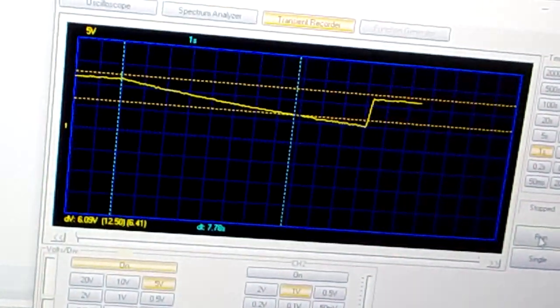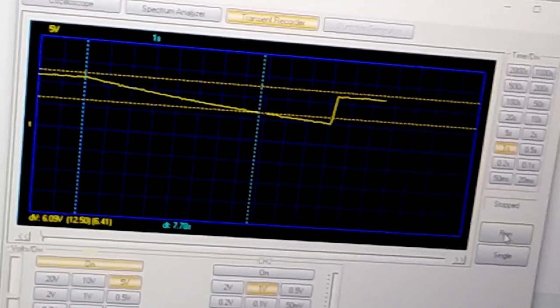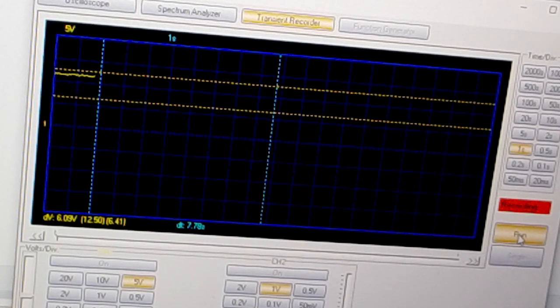Over here on the PC screen you see a transient recorder. What it does is measuring the voltage on the capacitor, and then you can put it in a graph. I will restart the recorder. You can see over here there is a line running.